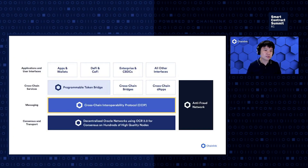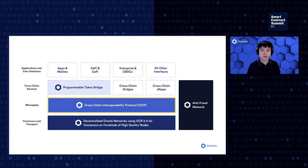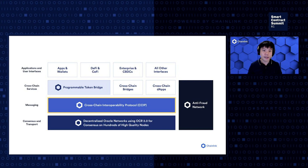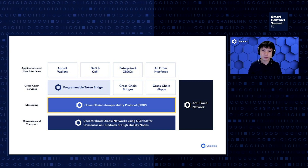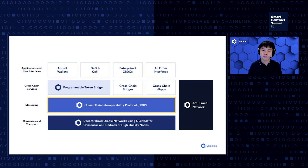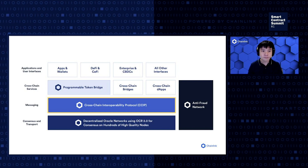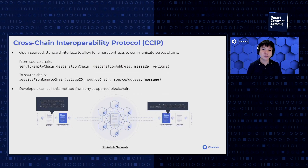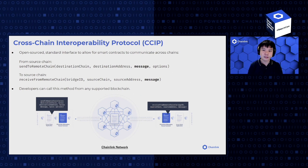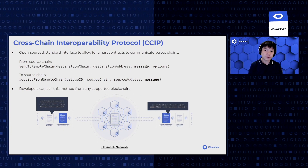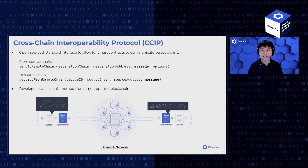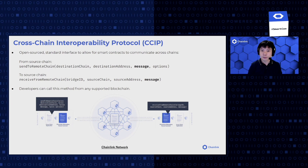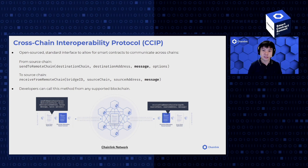Moving on to the second layer of the stack: the cross-chain interoperability protocol, or CCIP. This is an open standard where anyone can build cross-chain messaging between smart contracts across multiple chains. Developers call the send-to-remote-chain method from their app. Initially this will be on Chainlink-supported chains, but the idea is that it will expand to any blockchains that implement the CCIP.